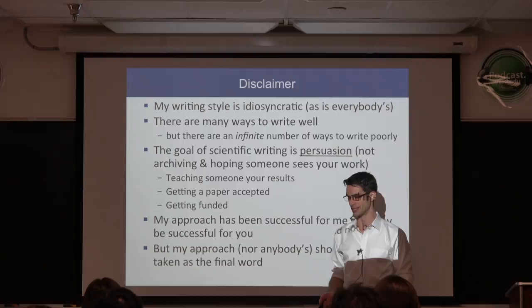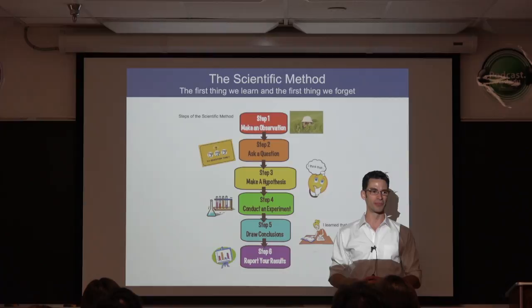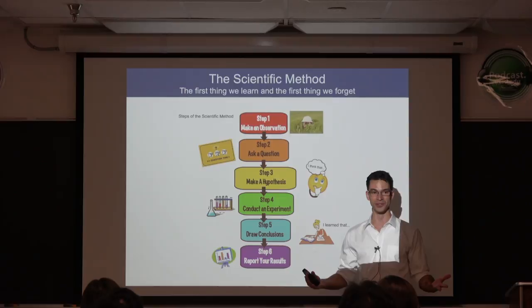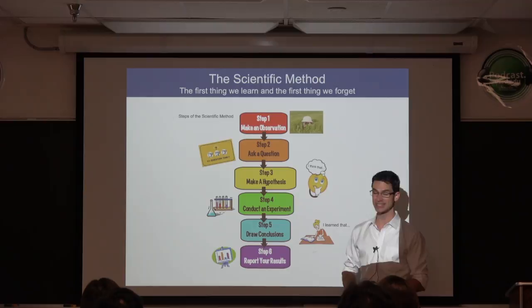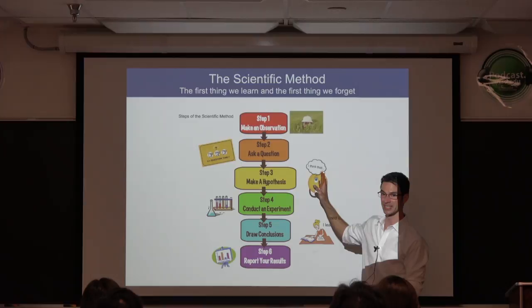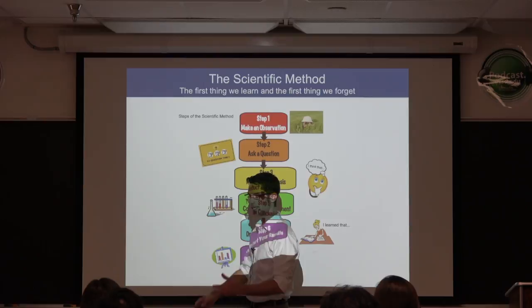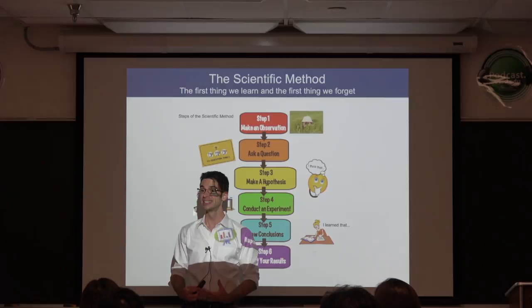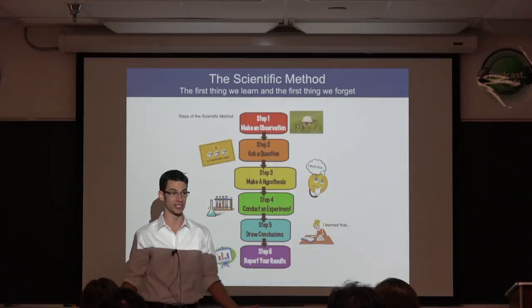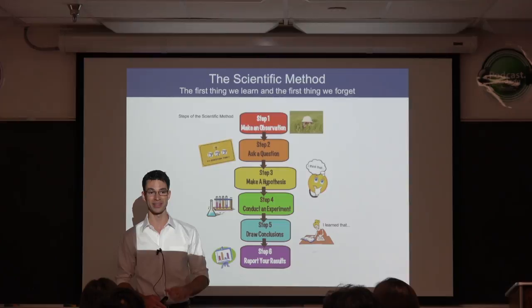We all remember the scientific method posters from fifth grade. The first thing we need to do is really internalize the scientific method. It seems ridiculous because it's the first thing we learn about science, but it's also the first thing we forget. We get so caught up in bookkeeping that we lose track of the fact that there should be a hypothesis — some explanatory mechanism around which the whole project is organized.